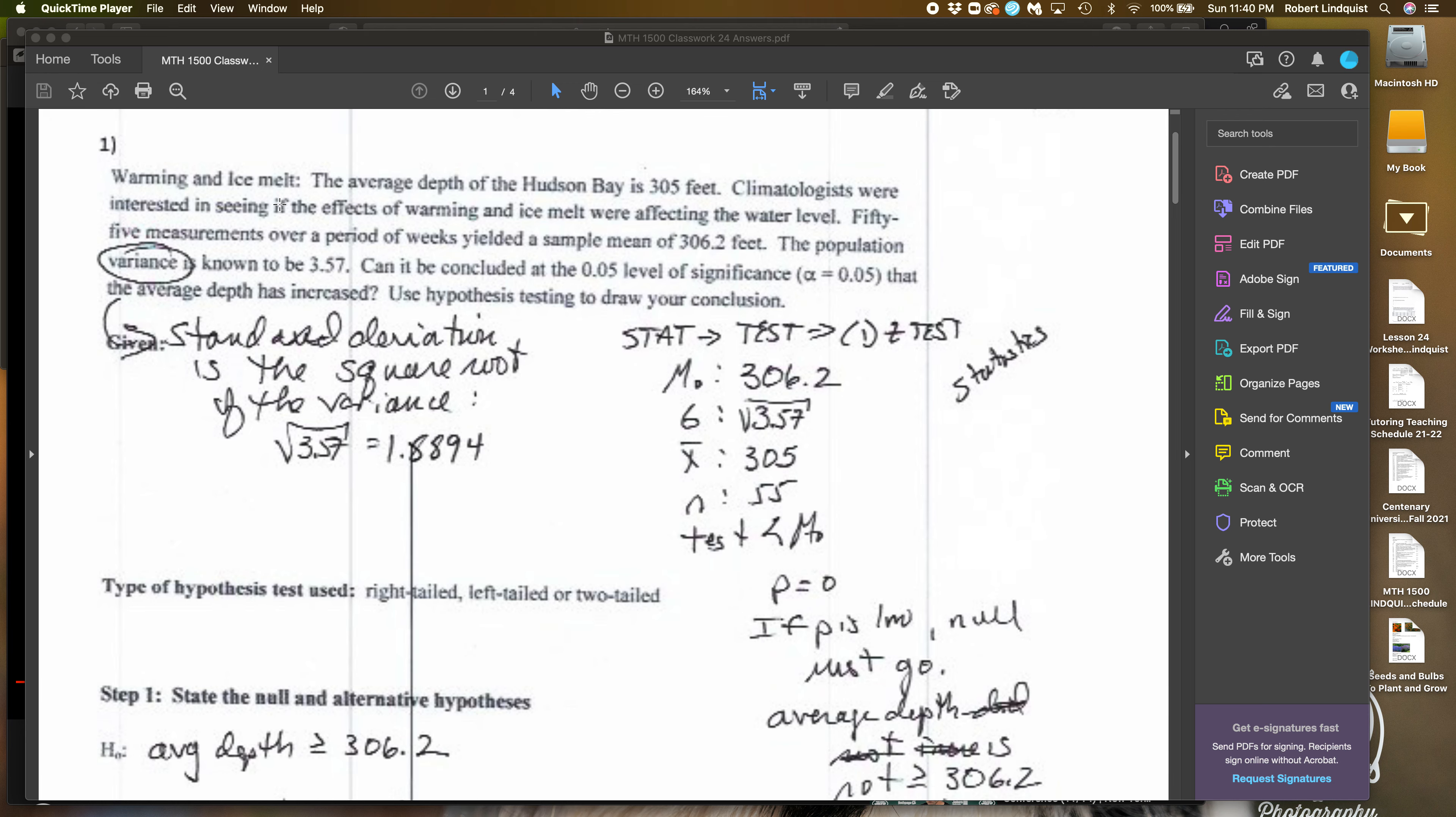Warming and ice melt. The average depth of the Hudson Bay is 305 feet. Climatologists were interested in seeing if the effects of warming and ice melt were affecting the water level. 55 measurements over a period of weeks yielded a sample of 306.2 feet.